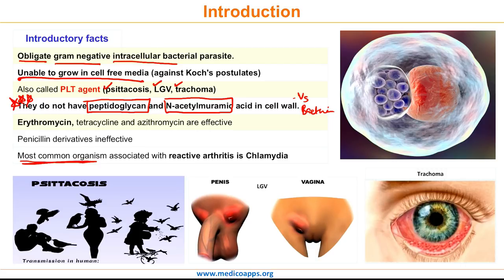Just to recap the three most important points: Number 1, Chlamydia is an obligate intracellular parasite, which means it cannot be grown in cell-free media as it exists only inside host cells. Point 2, Chlamydia does not have peptidoglycans and N-acetylmuramic acid in their cell wall, which differentiates it from other bacteria. Point 3, Chlamydia is the most common organism implicated in reactive arthritis.